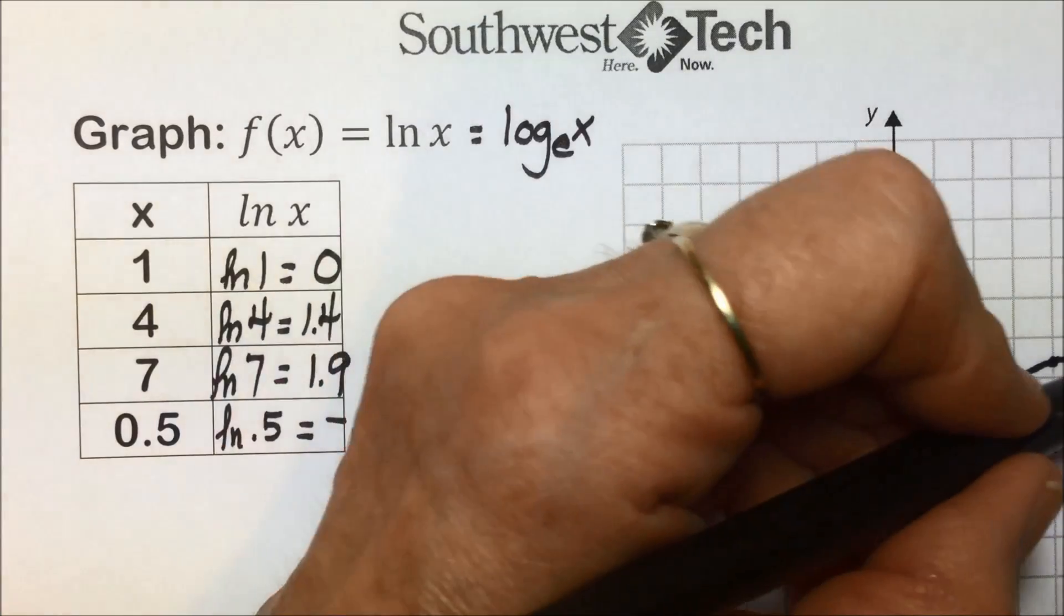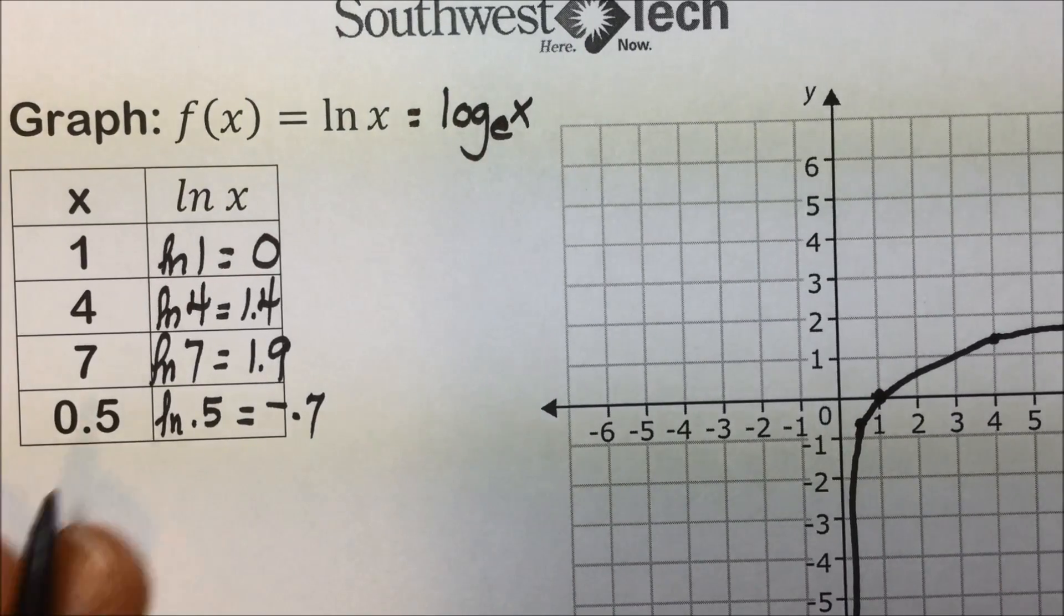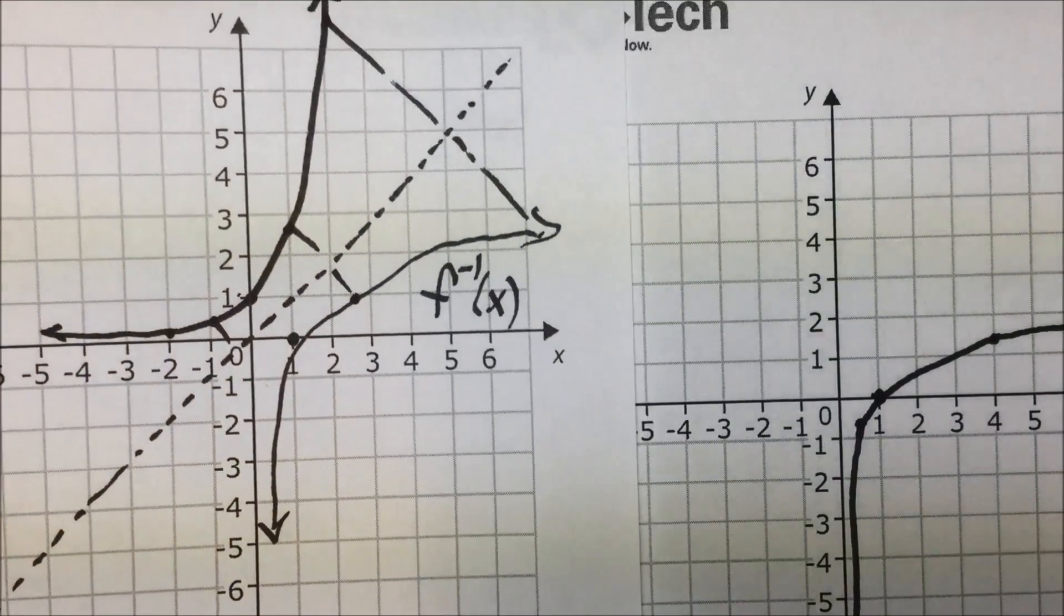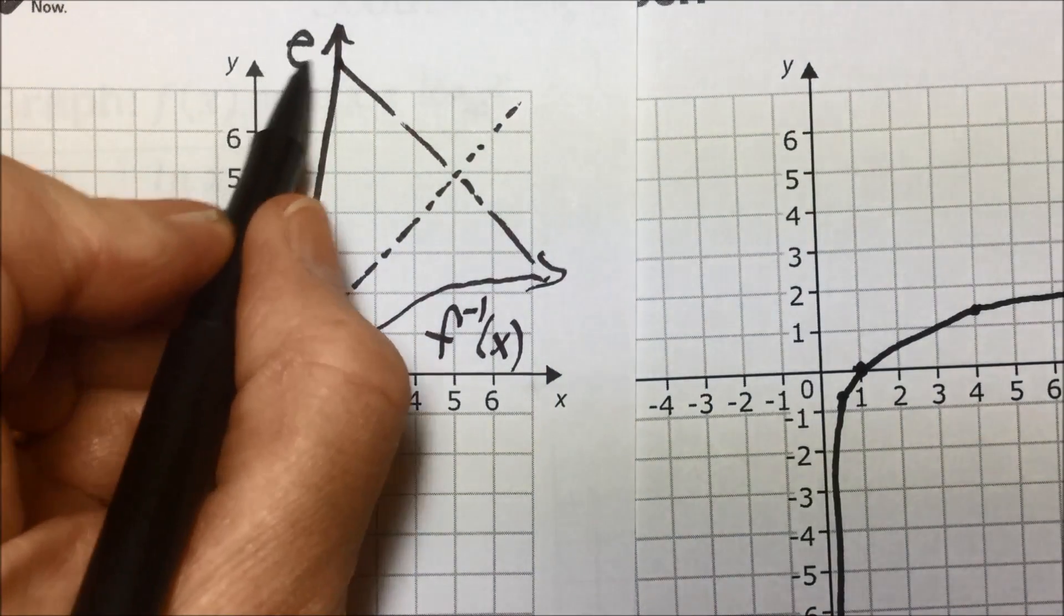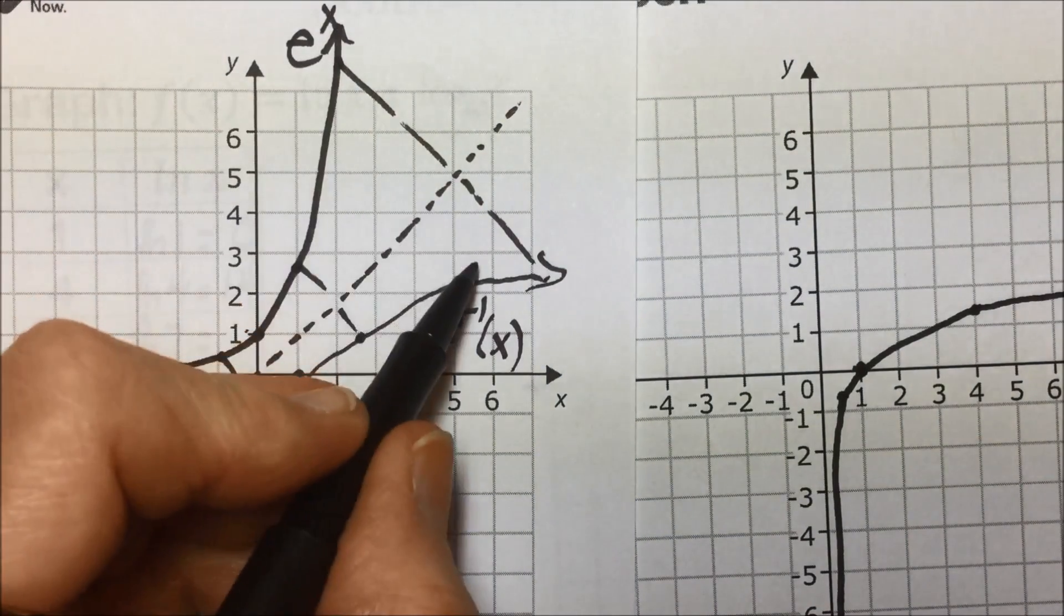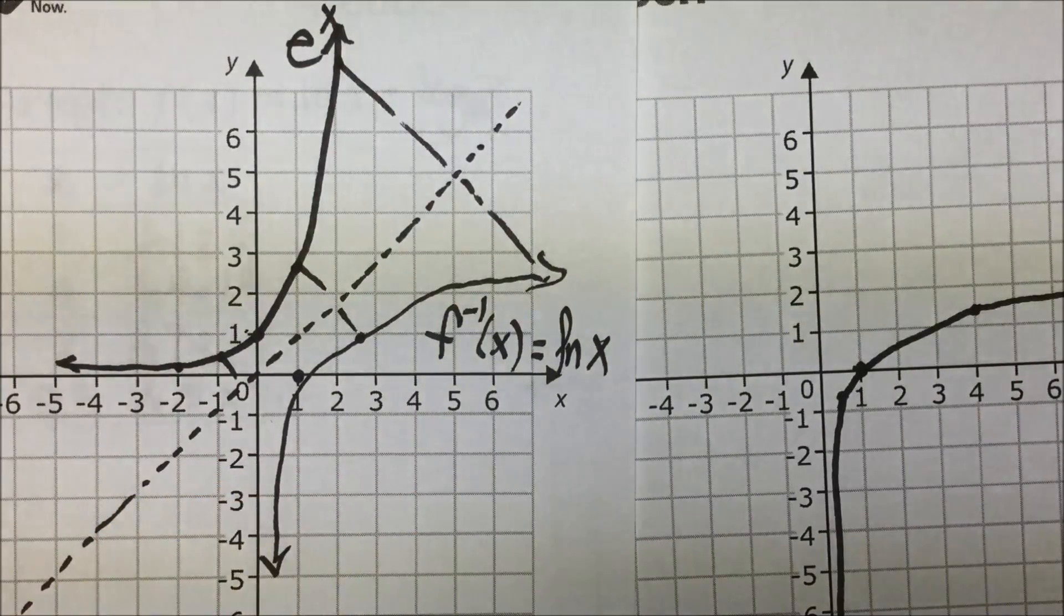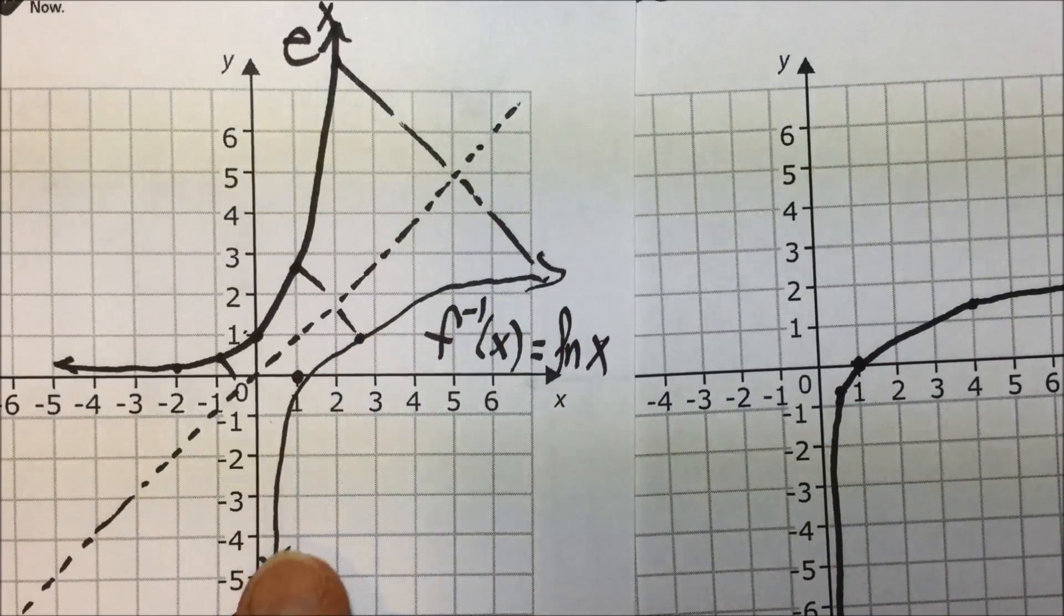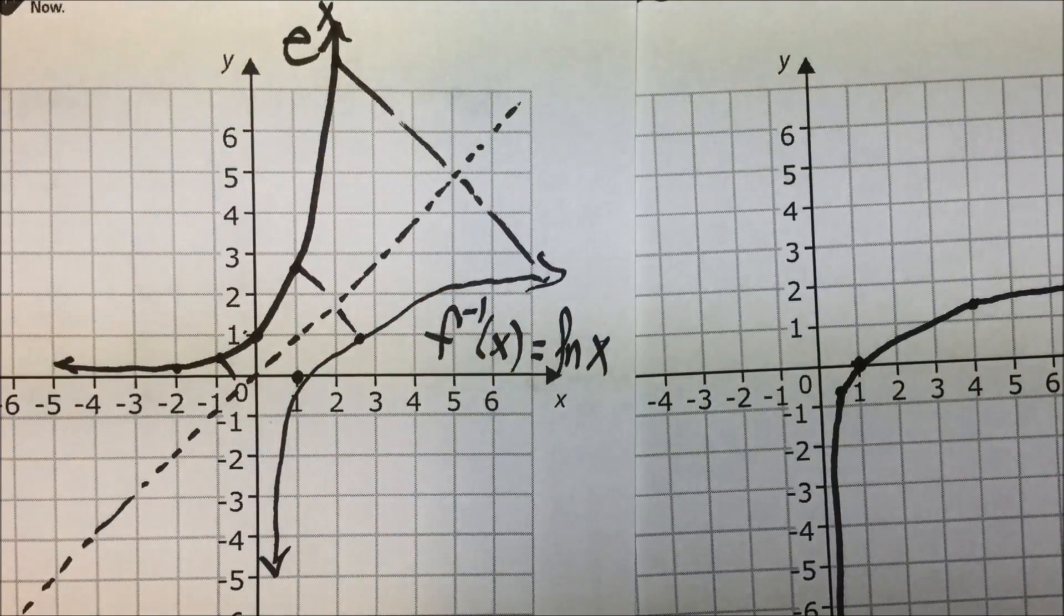which is acting as the asymptote of this function. So here we have the graph of the natural log, and as I drew the reflection of e to the x, its inverse is the natural log of x. As we can see, the graph here that we plotted by points is exactly the graph that is the inverse of e to the x.